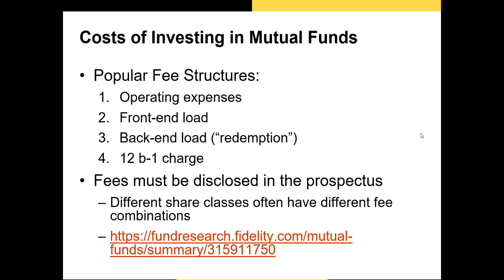Now let's discuss fee structures of mutual funds — every mutual fund will have a different fee structure, but here are the most common fees. The fee every mutual fund investor pays is for operating expenses, covering the salaries of the manager and researchers, overhead costs for offices, and any data and tools the fund needs. The next fee you might see is the front-end load — the fee you pay as soon as you invest, as a percentage of the value you invest. The back-end load or redemption fee is the percentage of the value you're withdrawing from the fund, charged when you pull your money out, often used to prevent investors from withdrawing too quickly. Finally, we have the 12B-1 fee, which covers the advertising expenses of the mutual fund — the salespeople hired to sell new shares. All of these fees are disclosed in the fund's prospectus.